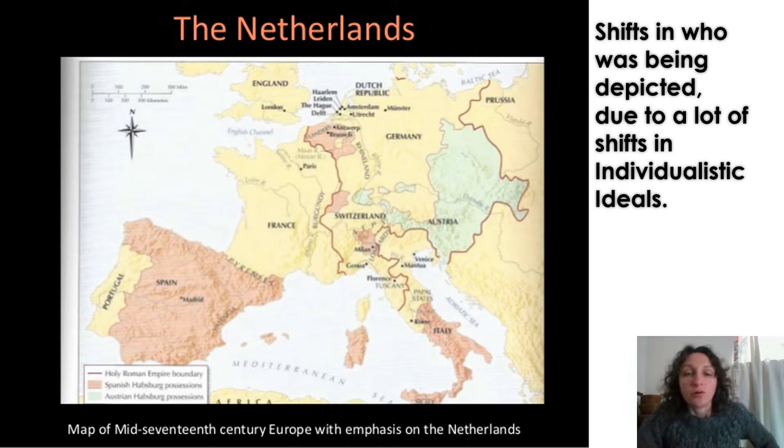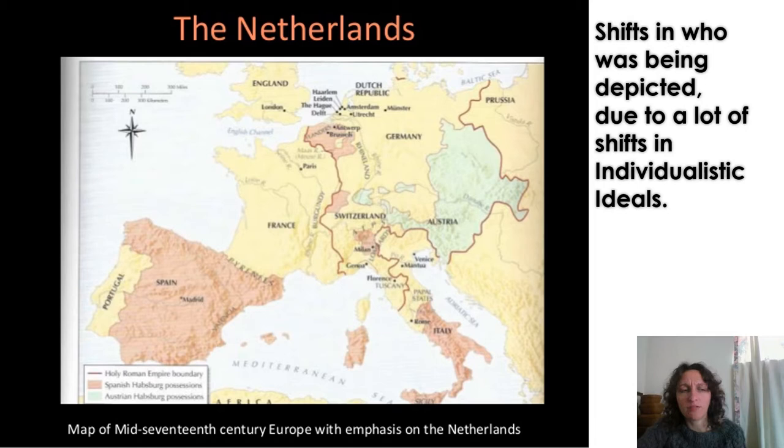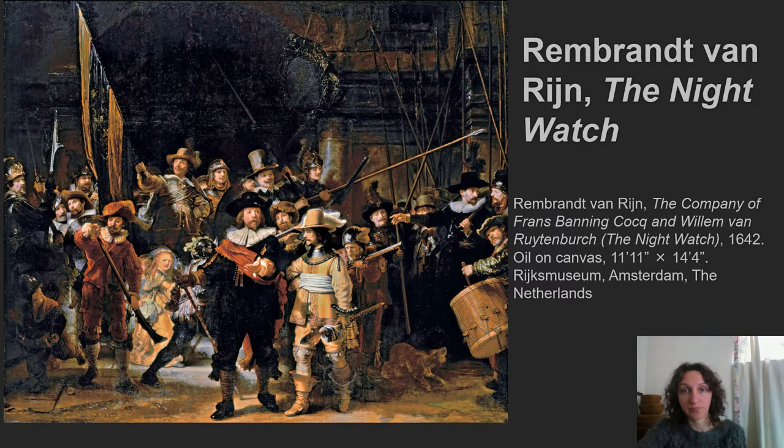There are some shifts in thinking during this time in history. Individualism is very prominent and people are very interested in the Enlightenment — what life means, those kinds of questions are being answered. That is going to shift who is being depicted in the art world. The first artwork we're going to look at is Rembrandt.